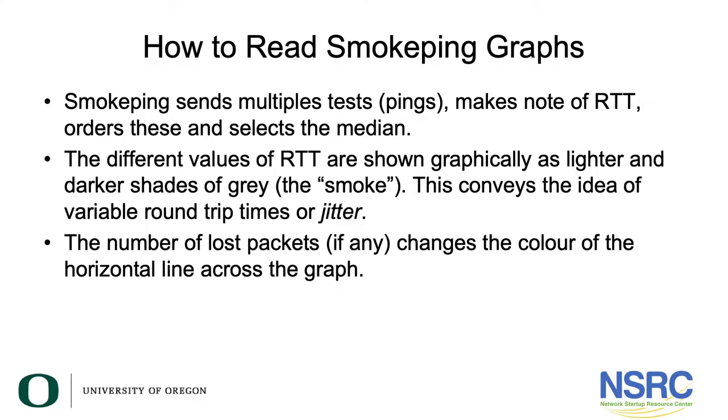SmokePing will tell you when there is a variation in delay, but not exactly where the delay or variation is taking place or why. If you are measuring jitter on a circuit and see unexpected round trip times or unexpected variation in round trip times, you can use additional tools to figure out where problems are taking place — for instance, tools such as PerfSONAR, MTR, or simply pinging each point in a path.